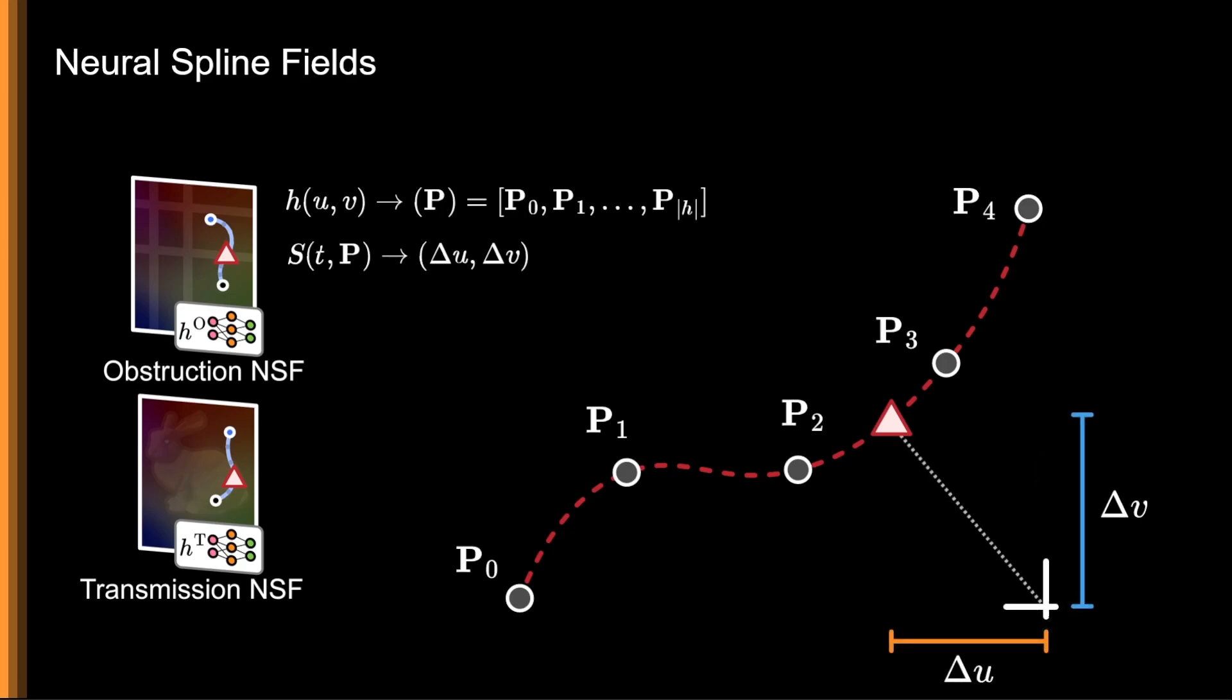Note that time is never input into the network, but rather only used to interpolate its output, meaning the temporal behavior of these neural spline fields is entirely dictated by the number of points p we choose as its output dimension, independent of the data, training procedure, and loss functions.